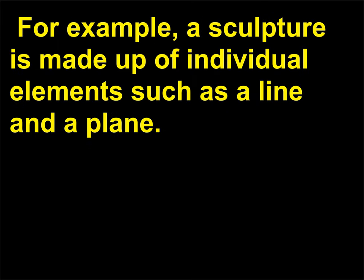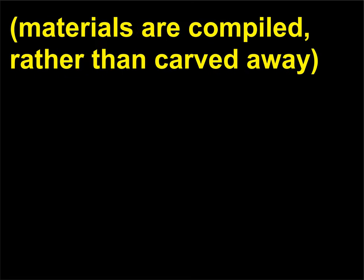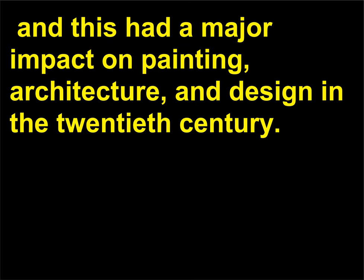For example, a sculpture is made up of individual elements such as a line and a plane. This new concept conceived of sculpture as an additive rather than reductive process — the materials are compiled rather than carved away — and this had a major impact on painting, architecture, and design in the 20th century.